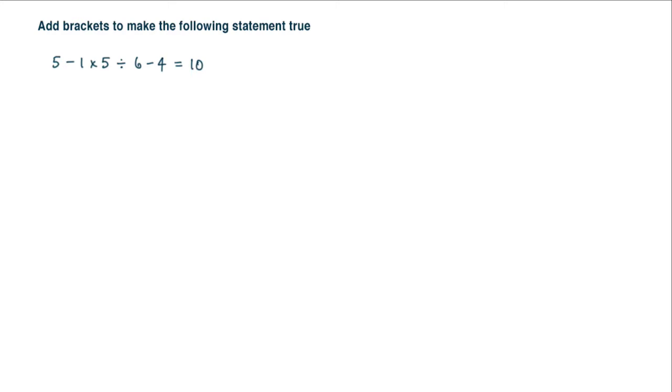Let me show you how we actually answer these questions. The first thing we need to do is take the left hand side. So taking the LHS, we would have 5 minus 1 multiplied by 5 divided by 6 minus 4. And what I'm trying to do is add brackets somewhere here to make it equal to 10.